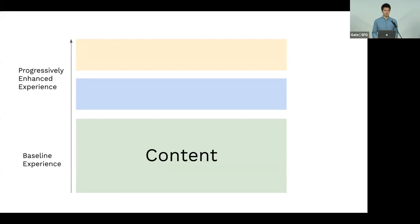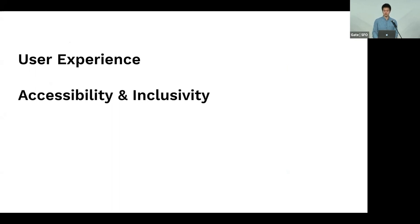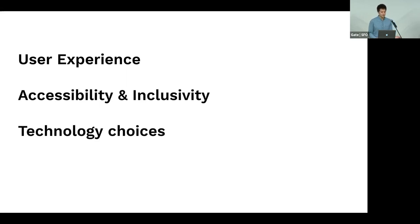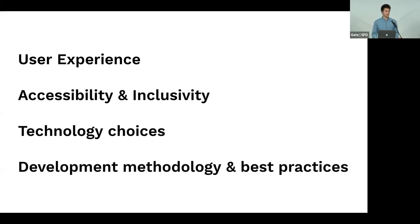This principle of progressive enhancement quickly became the mantra of the web development community, because it encapsulates a lot of important ideas: user experience, accessibility and inclusivity — making sure products work across a wide range of hardware and software capabilities — as well as technology choices around HTML, CSS, and JavaScript, development methodology, separation of concerns, and mobile-first development.